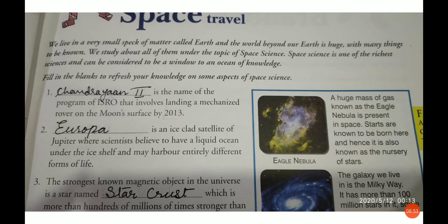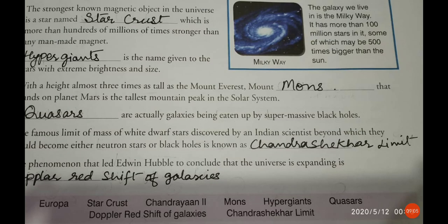The strongest known magnetic object in the universe is a star named magnetar, which is more than hundreds of millions of times stronger than any man-made magnet. Hypergiant is the name given to stars with extreme brightness and size. Olympus Mons, which stands on the planet Mars, is the tallest mountain peak in the entire solar system — almost three times as tall as Mount Everest.